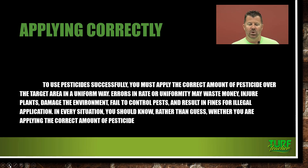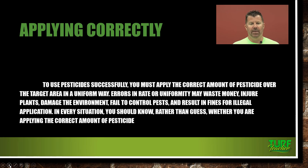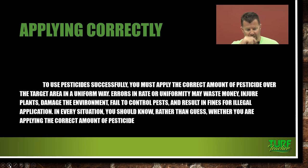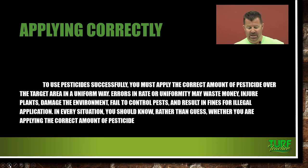To use pesticides successfully, you must apply the correct amount of pesticide over the target area in a uniform way. Errors in rate or uniformity may waste money and your plants, damage the environment, fail to control the pest, and result in fines for illegal application. You should know in every situation, rather than guess, whether you're applying the correct amount of pesticide.